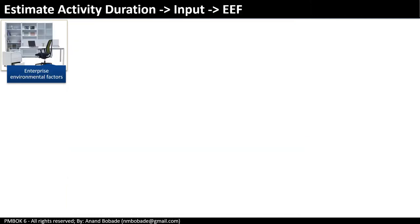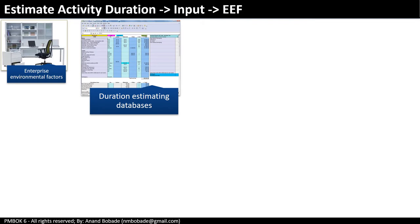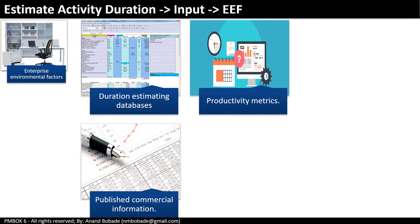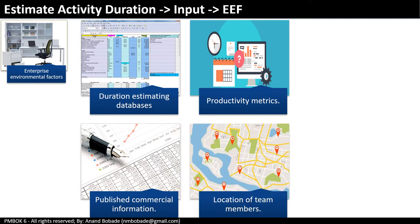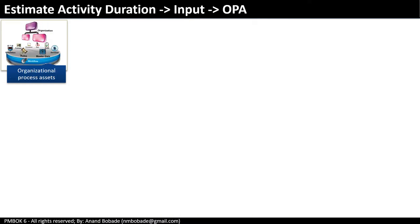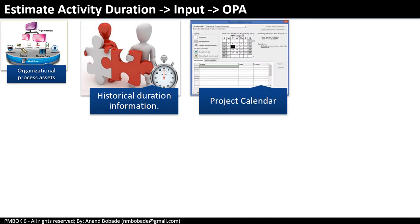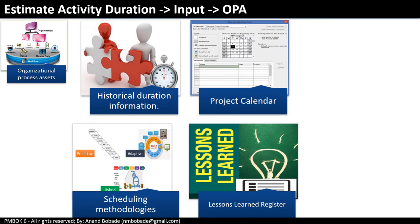Enterprise environmental factors critical to this process include: reference databases containing duration estimates for similar activities, productivity metrics, published commercial information on duration estimates for standard work in the industry, and location of team members. Organizational process assets that can influence duration estimates include: historical duration estimates, project calendars from similar projects, scheduling methodology, and lessons learned repositories from other similar projects — especially about how duration estimates were developed.